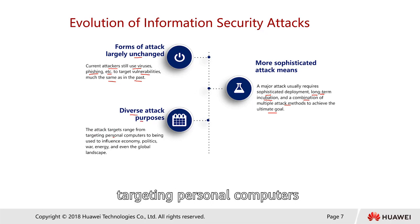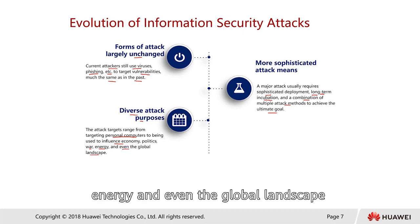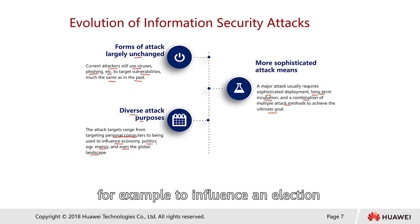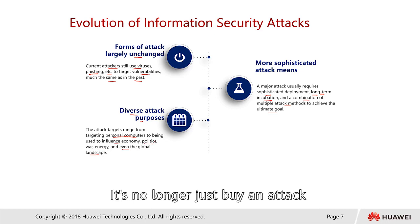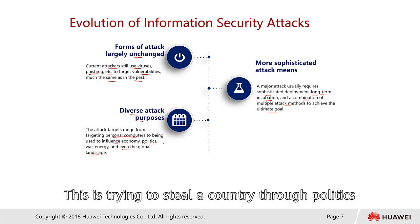Attack purposes have also become more diverse. Attack targets have expanded from personal computers to influencing the economy, politics, wars, energy, and even the global landscape. Nowadays, social media has also been used as a weapon to influence political decisions — for example, to influence an election. Modern attacks are no longer just about stealing money or information; they can target an entire country's politics.